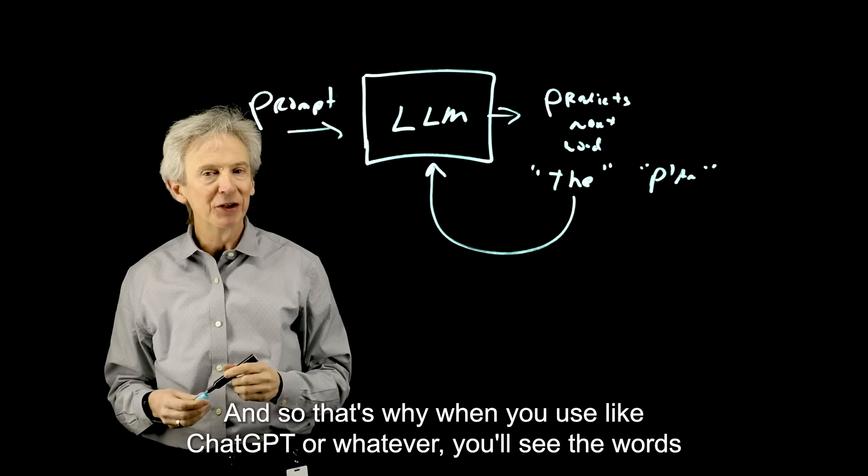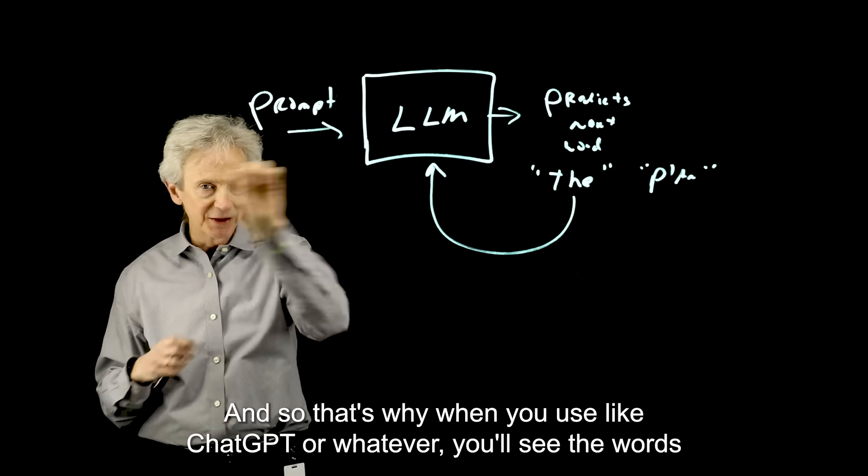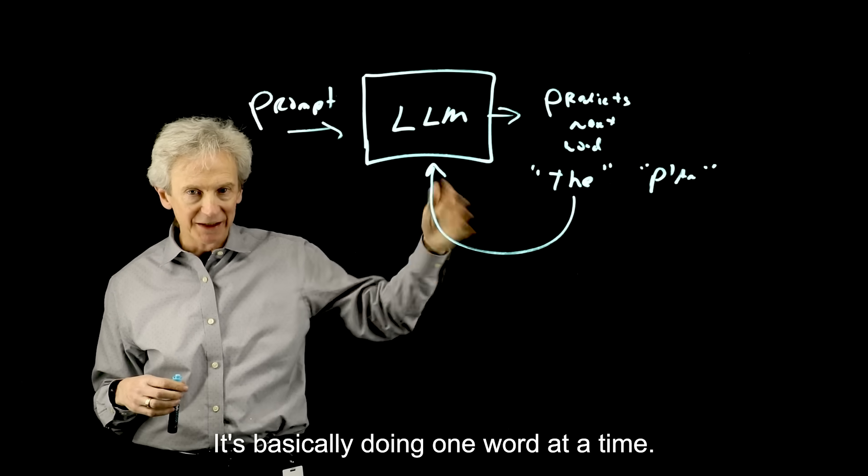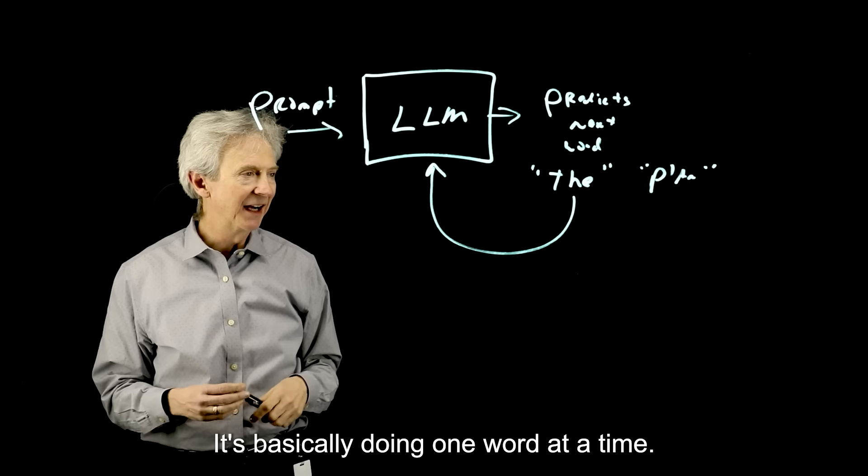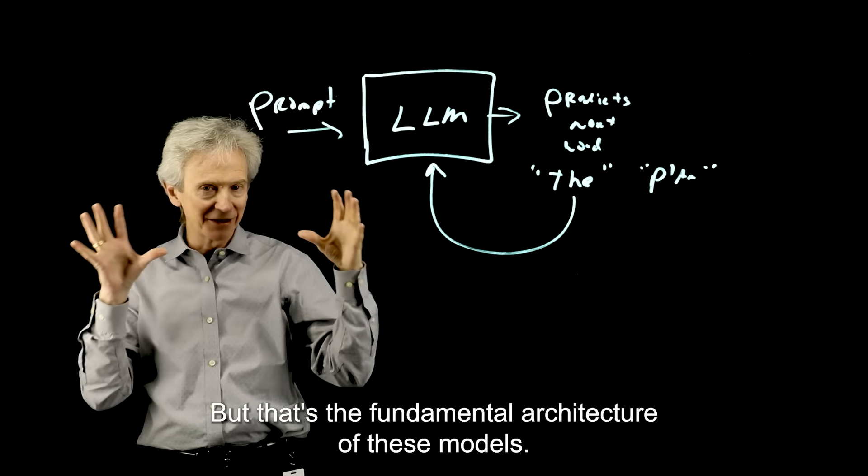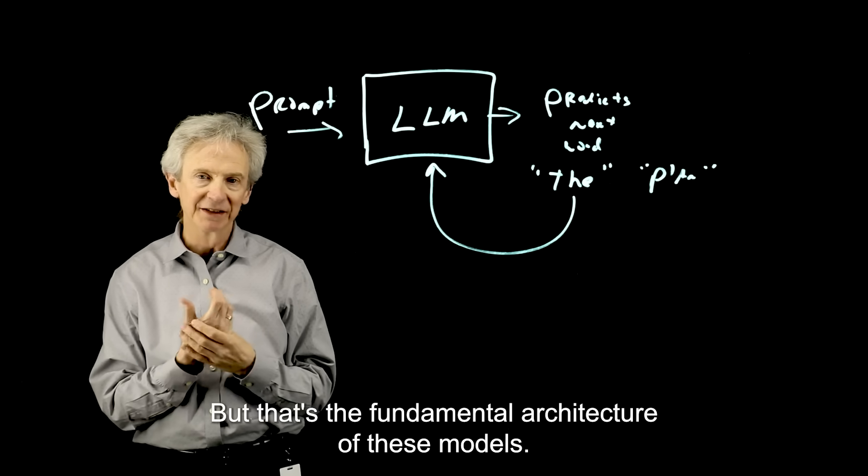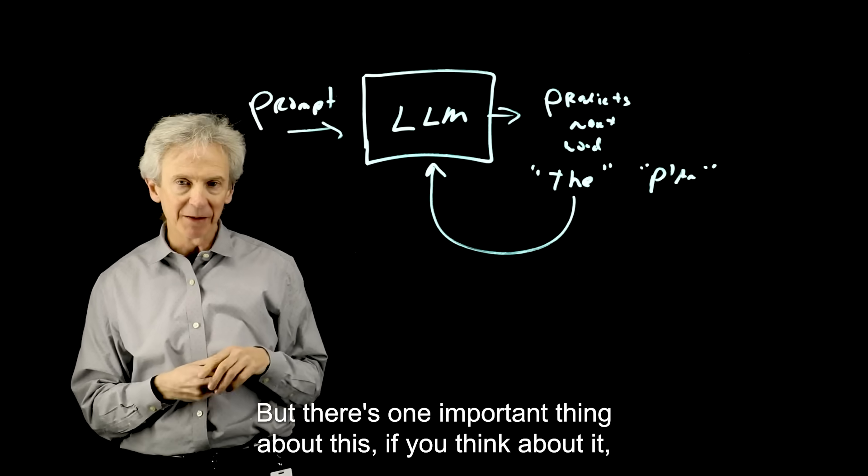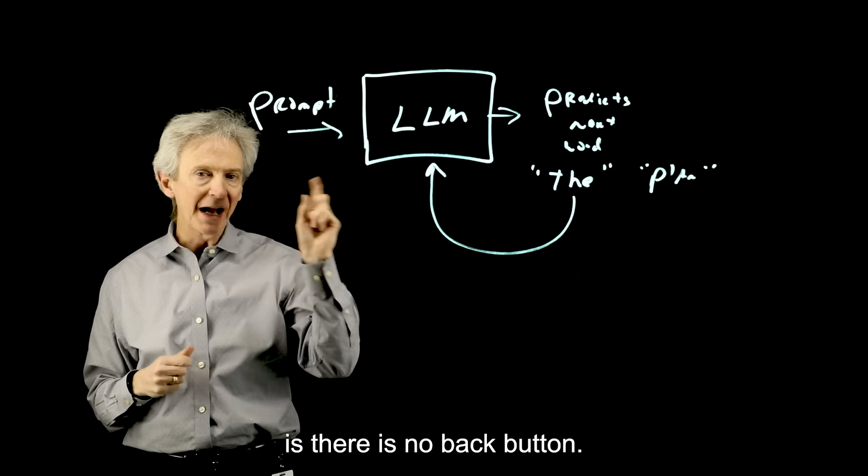And so that's why when you use ChatGPT or whatever, you'll see the words come off incrementally, because that's the way the model is working. It's basically doing one word at a time. So it's kind of amazing that it works, but that's the fundamental architecture of these models.